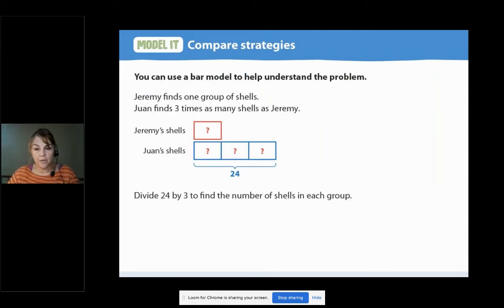Let's take a look at another way of working it out. You can use a bar model to help understand the problem. Jeremy finds one group of shells. Juan finds three times as many shells as Jeremy. I want you to point to that red box. That represents Jeremy's shells. Do we know how many Jeremy found? No. That's why there's a question mark in the box. It's unknown. Let's move to Juan's boxes. He has, count them with me, one, two, three boxes. I want you to point on the bar model where it shows me how many seashells. Seashells now, not boxes. How many seashells Juan found? Are you pointing to the 24? I knew you were.